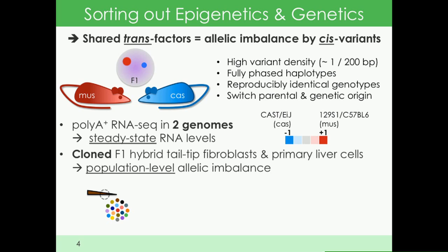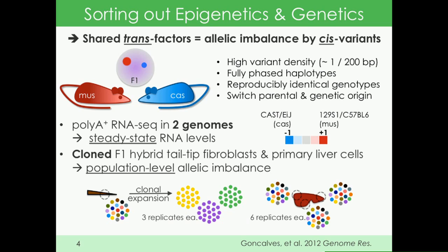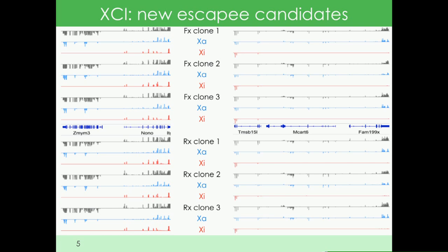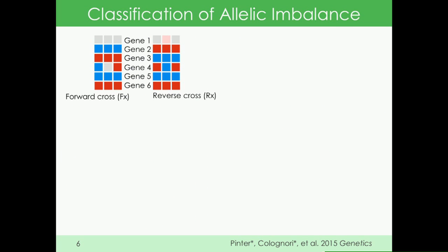The material we used were tail-tip fibroblasts from F1 hybrids, which David cloned. That gave us the opportunity to look at random monoallelic expression, which is maintained during expansion. We had a control dataset of primary liver biopsies from the Marioni group. I'll skip over this in the interest of time, but if you do this in female animals, you can identify new genes that escape X-inactivation. Here are two examples.